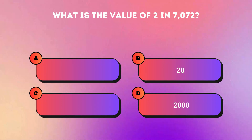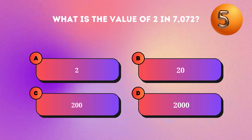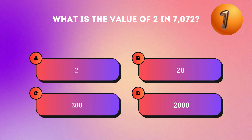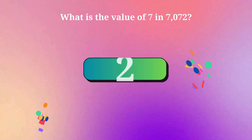What is the value of seven in seven thousand and seventy-two? Two.